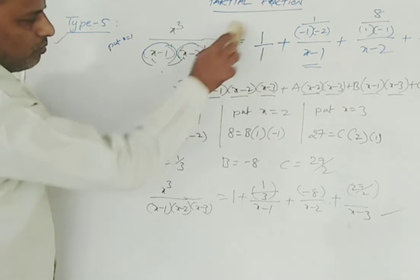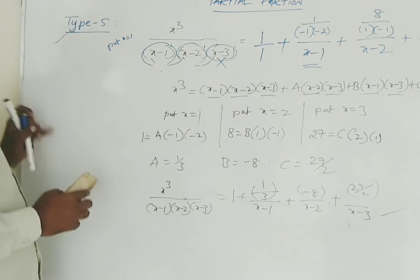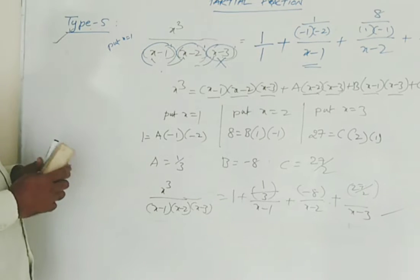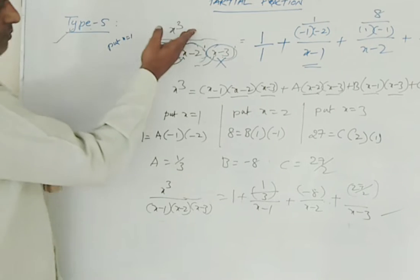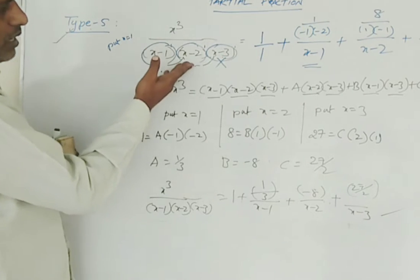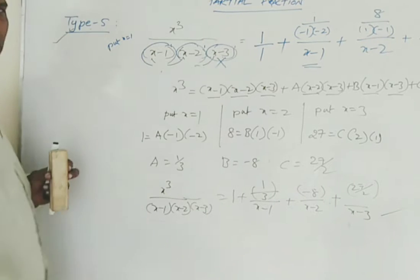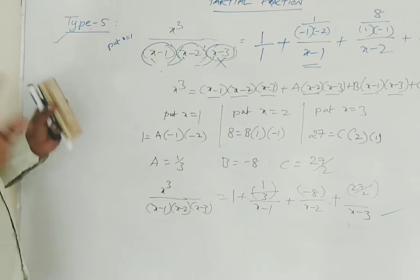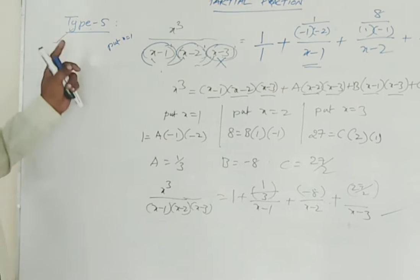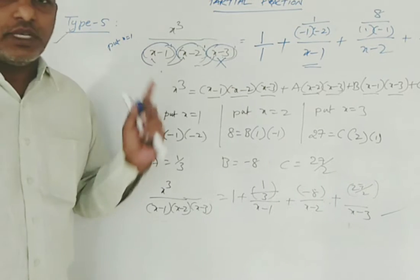So the only addition compared to types 1 through 4 is that when the degree of f of x equals the degree of g of x, a constant must be added. That is the defining feature of Type 5.